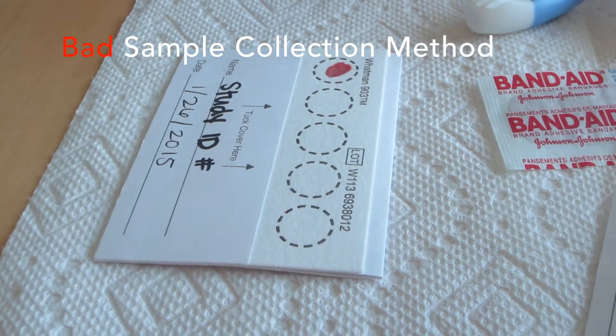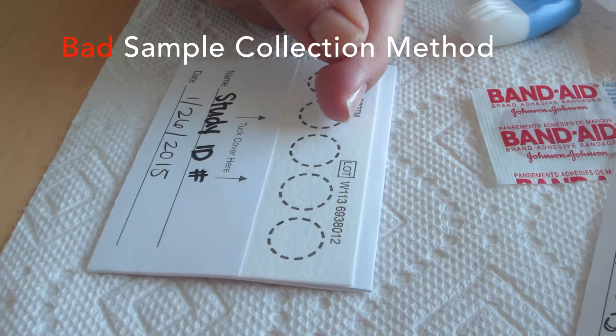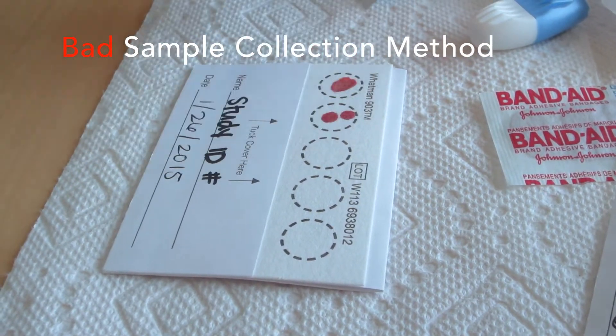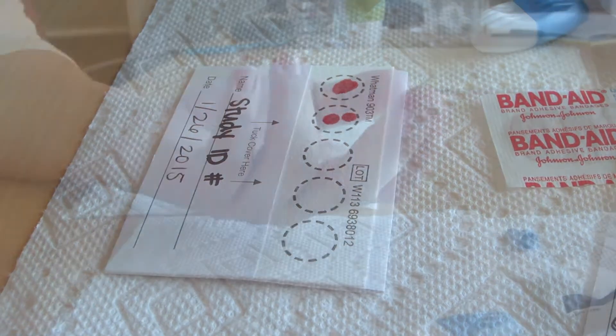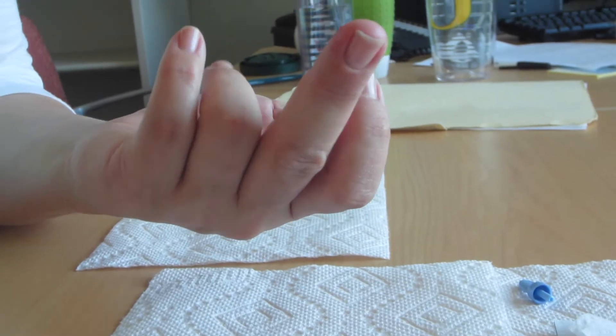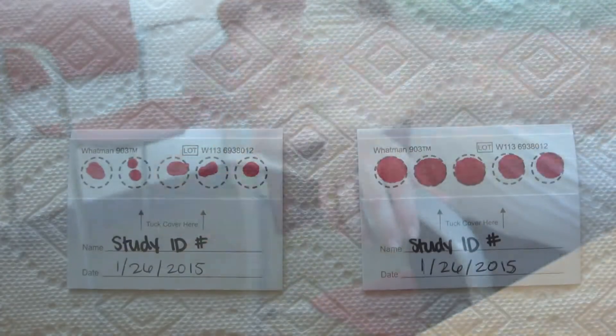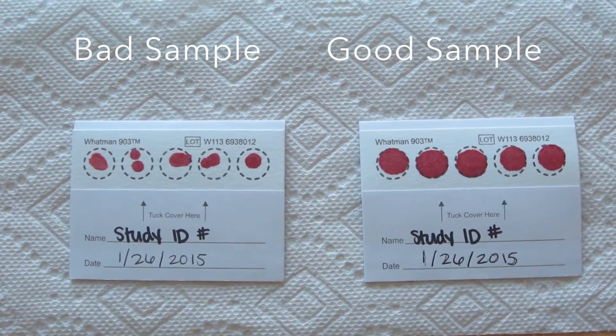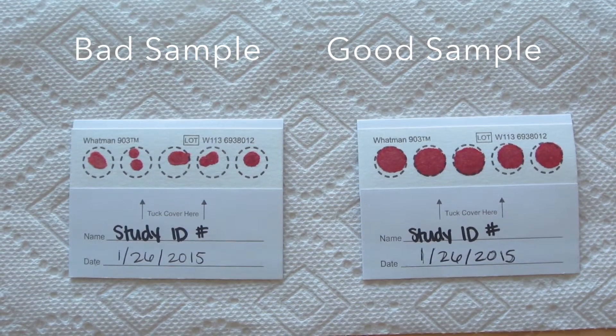Do not press your finger down on the circle or add more than one blood drop to each circle. If blood stops flowing from the pricked finger, you can wipe the pricked finger with gauze or lower your hand below your waist and shake it to encourage blood flow. If none of this works, please use the second lancet to prick a different finger and complete the collection card.